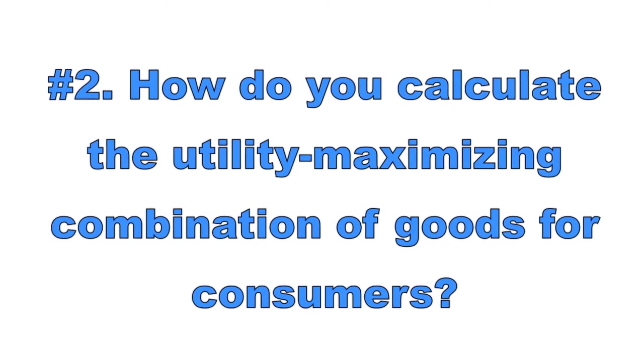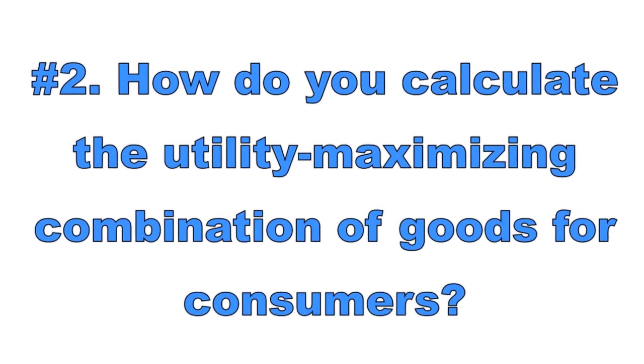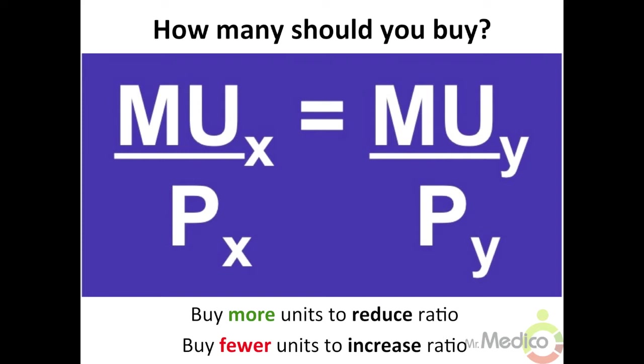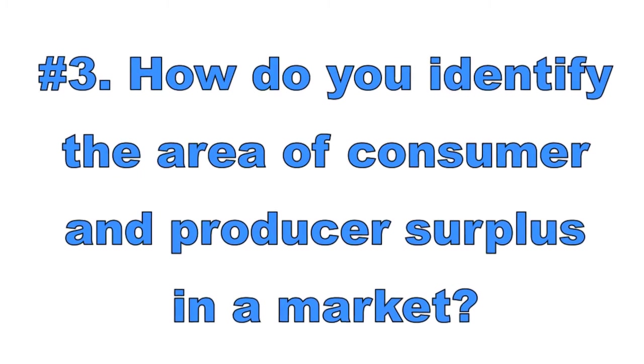Number two: how do you calculate the utility-maximizing combination of goods? When a buyer purchases two types of goods, we can determine the utility-maximizing quantities of each good using the following equation: the marginal utility of good X divided by the price of good X should equal the marginal utility of good Y divided by the price of good Y. If you need the marginal utility divided by price to decrease, buy more units of that good, due to the law of diminishing marginal utility. If you need the marginal utility divided by price to increase, buy less of the good.